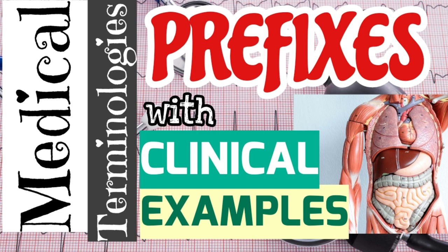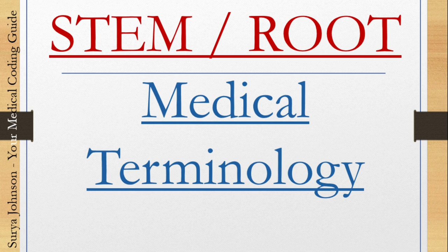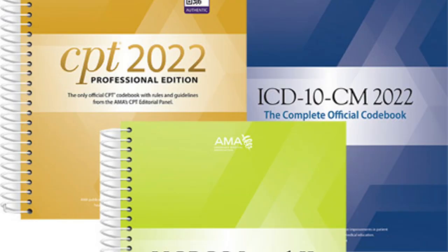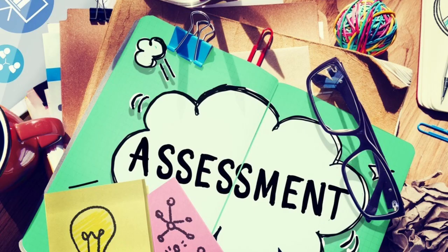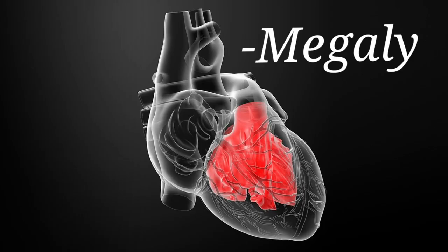We've now seen all the suffixes. In my previous video I covered the prefixes — if you haven't seen it, I'll put the link in the description below. In a future video I'll discuss the stem or root words in detail. Once you've learned all these prefixes, suffixes, and root words, it will be very helpful to derive the correct medical code. Let's do a self-assessment — I'll give you a few questions. What does '-megaly' in cardiomegaly mean?